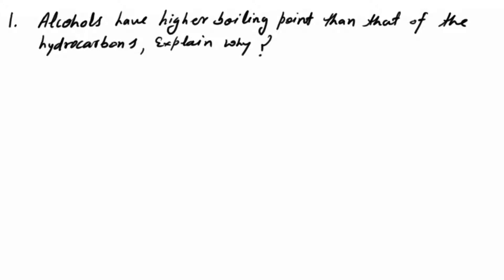जब भी हम इस तरह के questions का answer देने जाएंगे तो हमारे पास 3 key points पता होने चाहिए। First one is hydrogen bonding — जिस भी molecule या organic compound की boiling point को हमने check करना है उसमें कहीं hydrogen bonding तो नहीं हो रही है। दूसरा polarity — molecule polar है या non-polar है। और तीसरा point है van der Waals forces — molecules में van der Waals forces ज़्यादा हैं या कम। हमारे पास question है alcohol और hydrocarbons के बीच में।